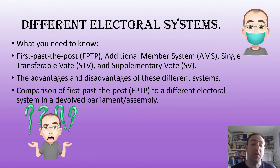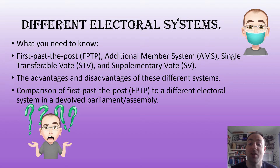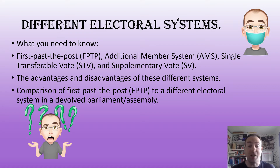So, different electoral systems — what you need to know. This is what the spec tells us you need to know for A-level politics. You need to know the first past the post system, the additional member system, the single transferable vote system, and the supplementary vote system. You need to know the advantages and disadvantages of these different systems.